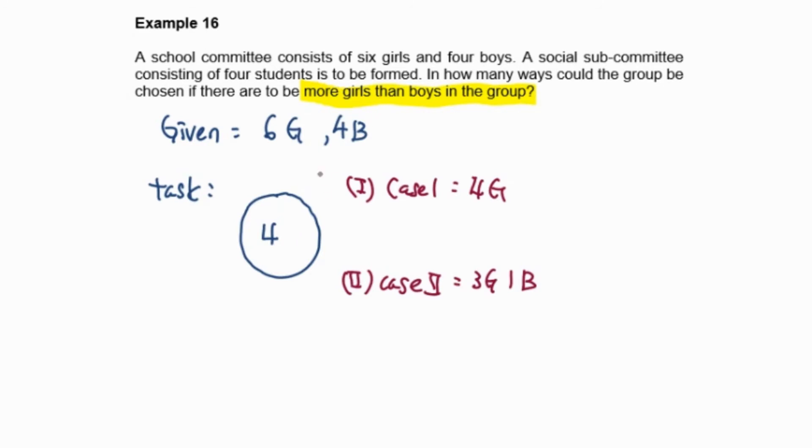Now we are going to calculate for the first case to choose four girls. In order to choose four girls in this group, I will take 6 choose 4, which equals 15 ways.